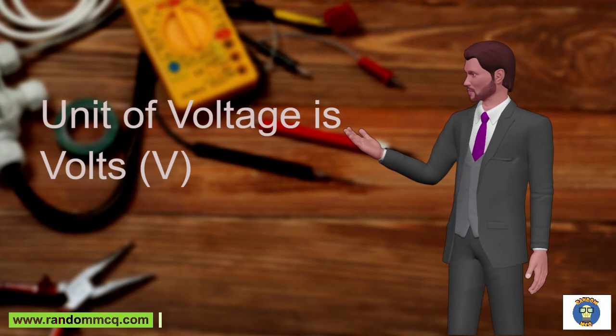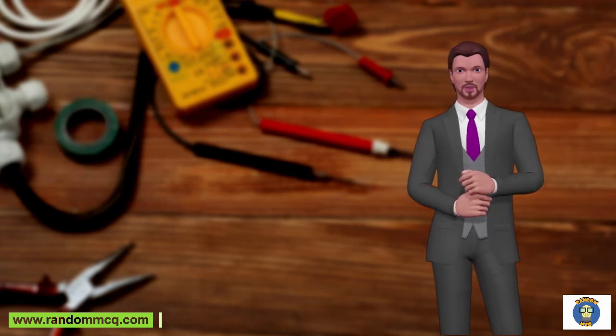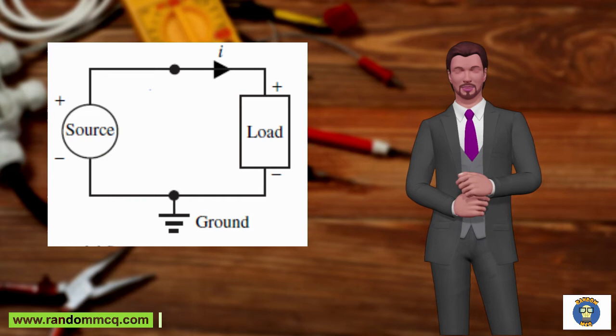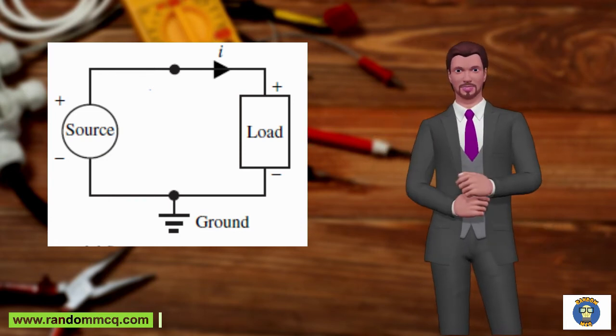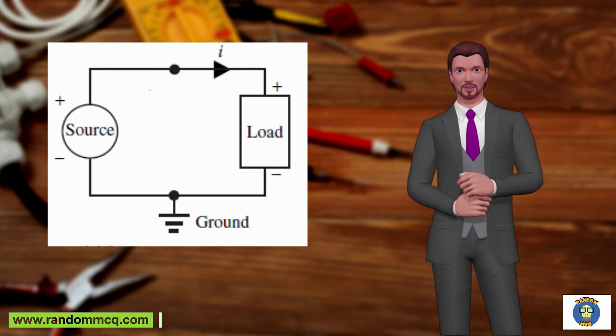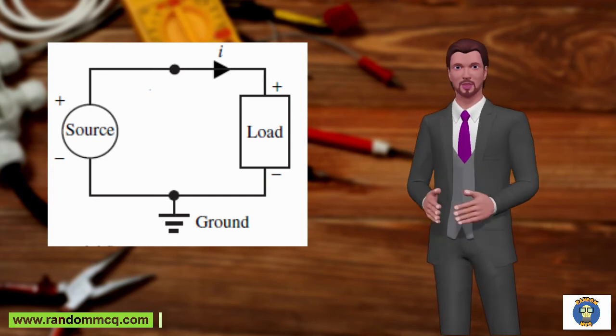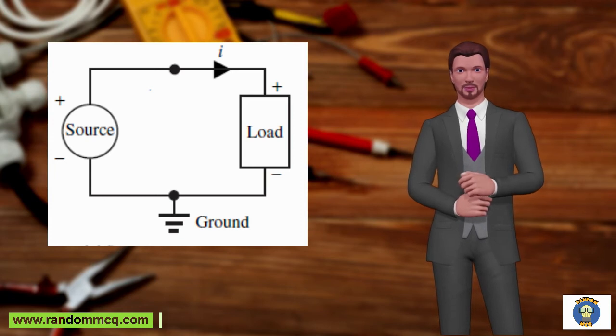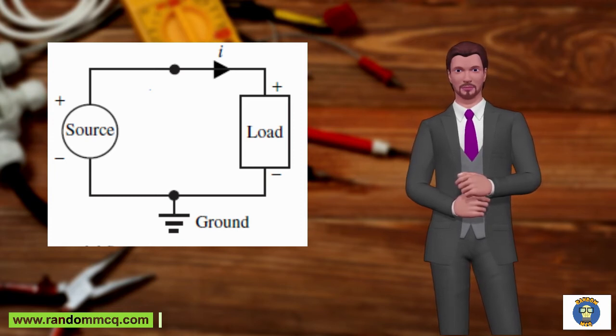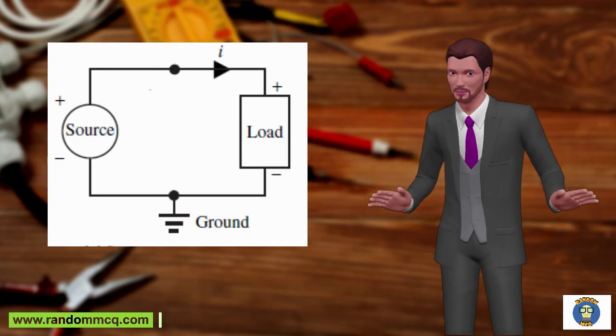What are sources and loads? A source-load combination is shown in this figure. A voltage rise indicates an electric source, with the charge being raised to a higher potential, whereas a voltage drop indicates a load, with a charge going to a lower potential. The voltage across the source is the same as the voltage across the load. The current delivered by the source goes through the load.